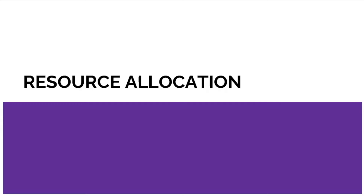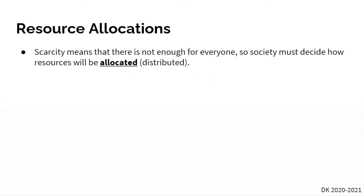Resource allocation. In our previous videos we talked about this concept of scarcity and how integral it is to understanding economics. Scarcity is just the idea that we have unlimited wants but limited resources to get those wants. Because of scarcity, how does society decide how to distribute or allocate their scarce resources?